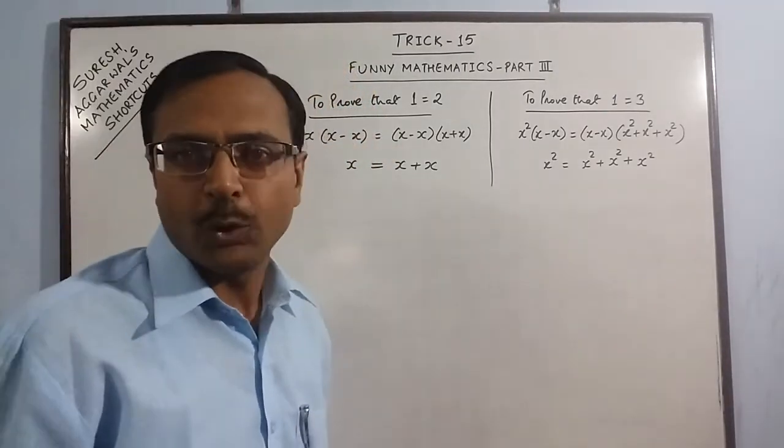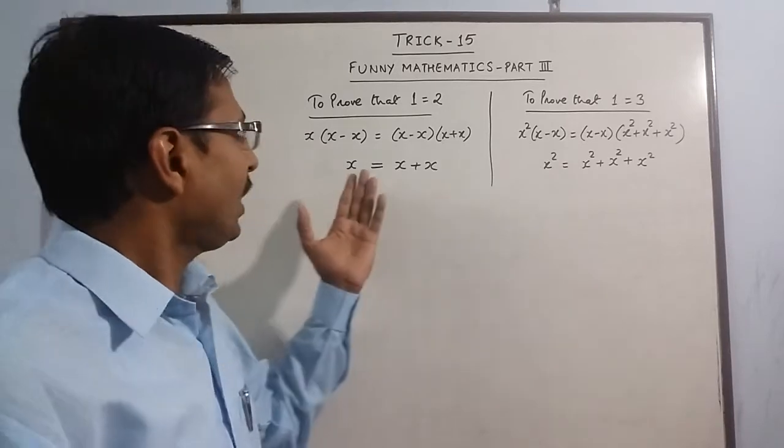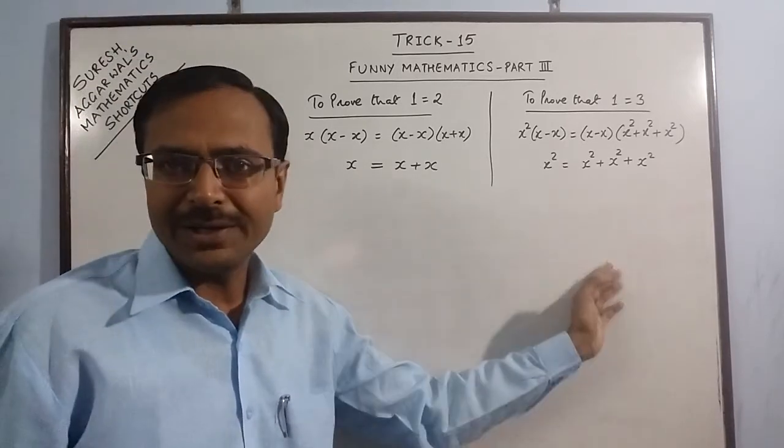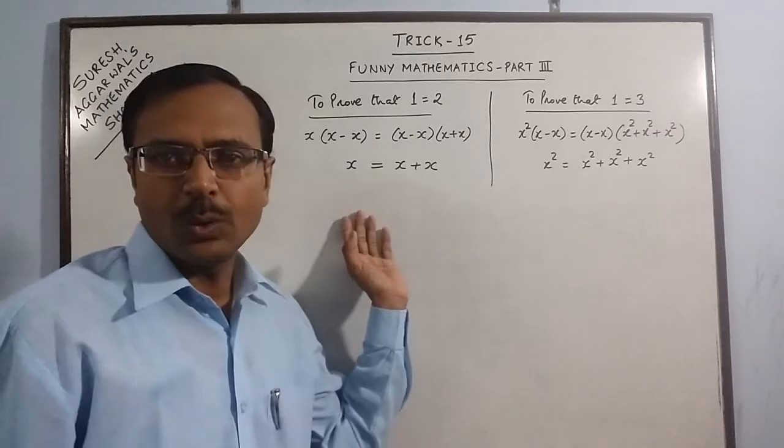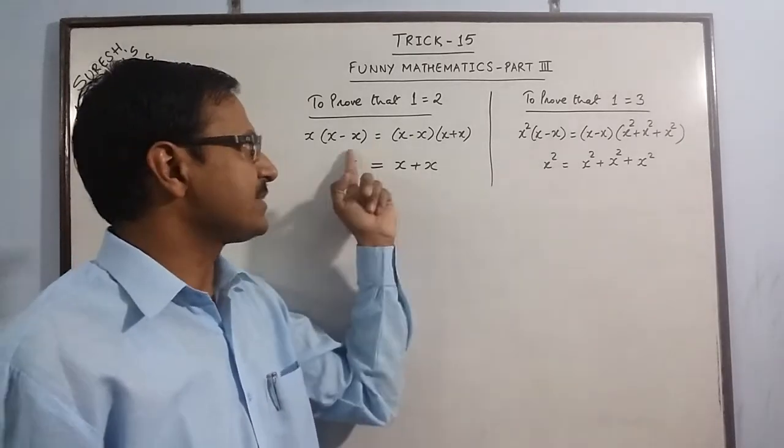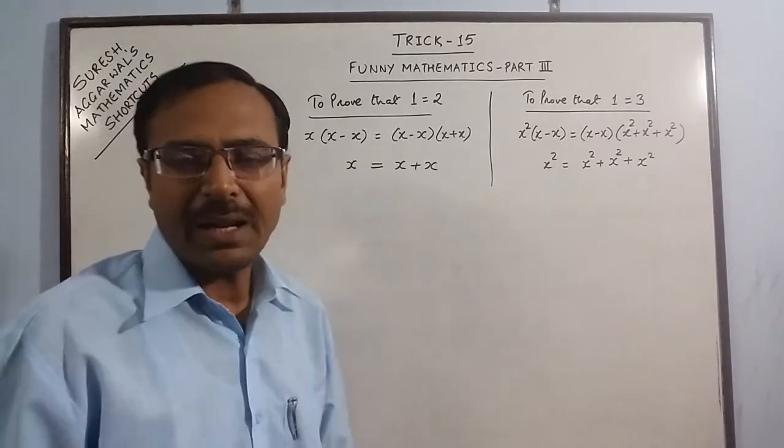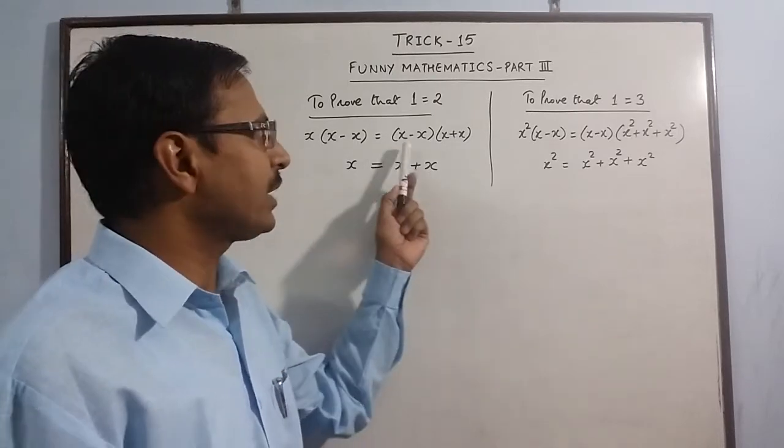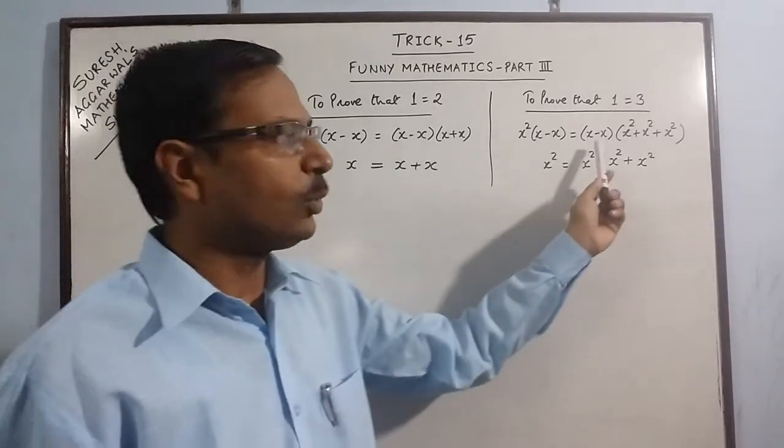You must have seen in trick 14 that we tried to prove these two identities and in doing so we arrived at these two steps where we applied the identity a square minus b square and a cube minus b cube.